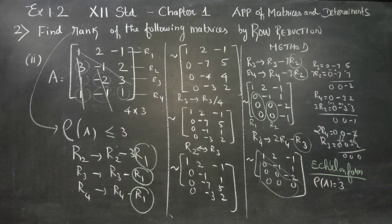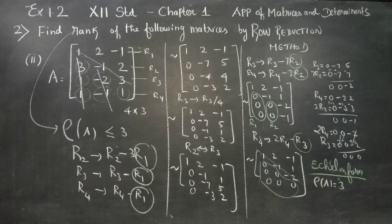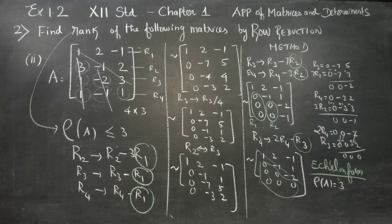The number sum is zero. That's why three rows are three non-zero rows. This rank is three. Thank you.